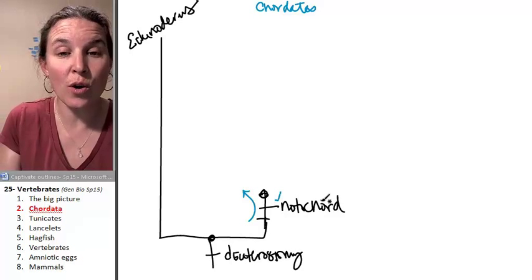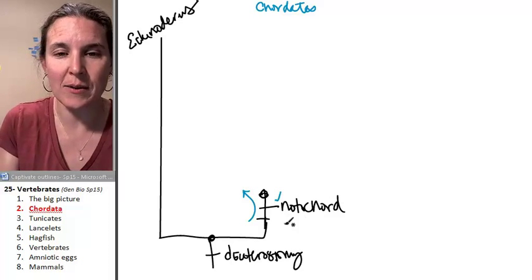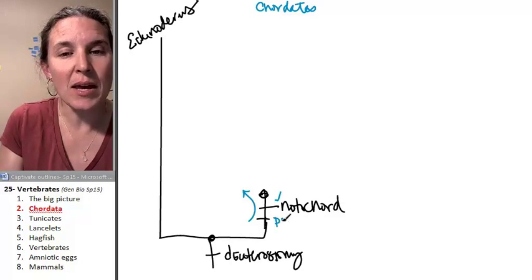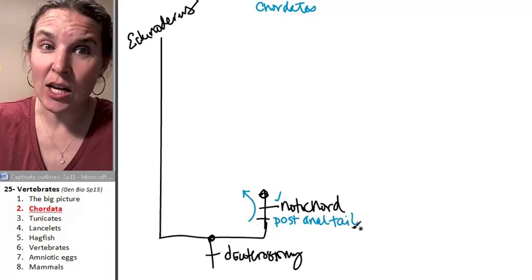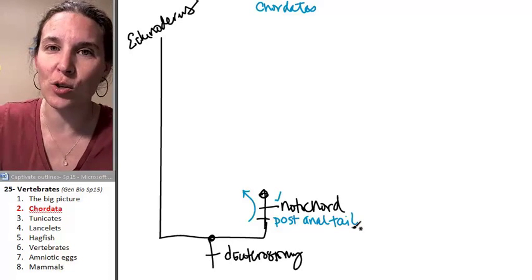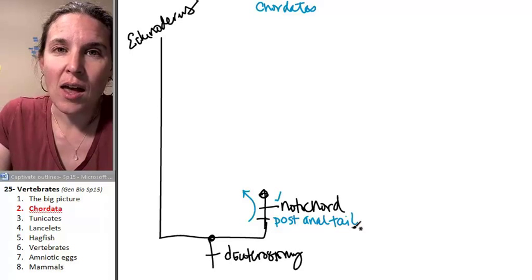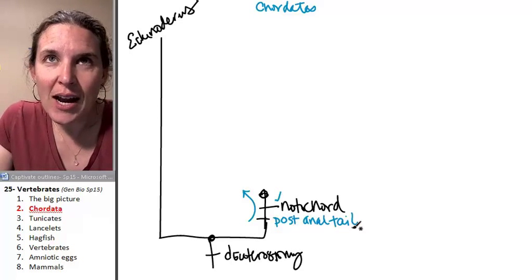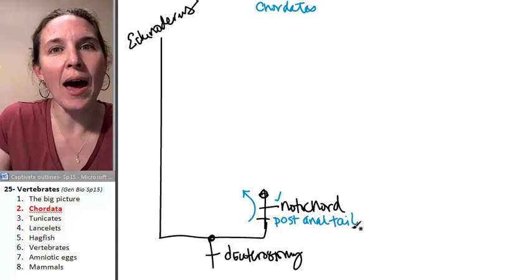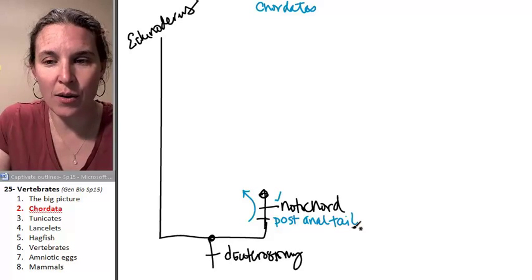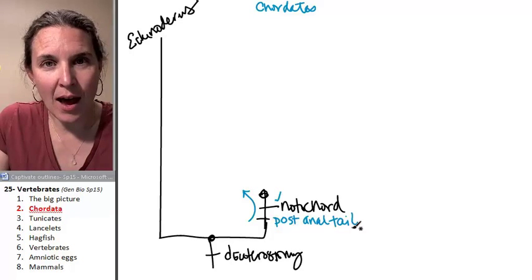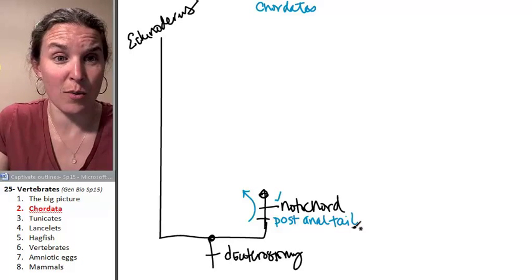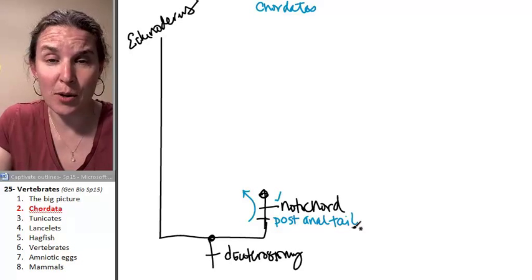Everything that has a notochord or any of the other things I'm about to list, such as the amazing post-anal tail. Yes, indeed. You, too, had a post-anal tail while you were in utero. It means beyond your anus you had little vertebrae that grew out there that were longer than your anus, and that was your tail. And most vertebrates keep their post-anal tails.